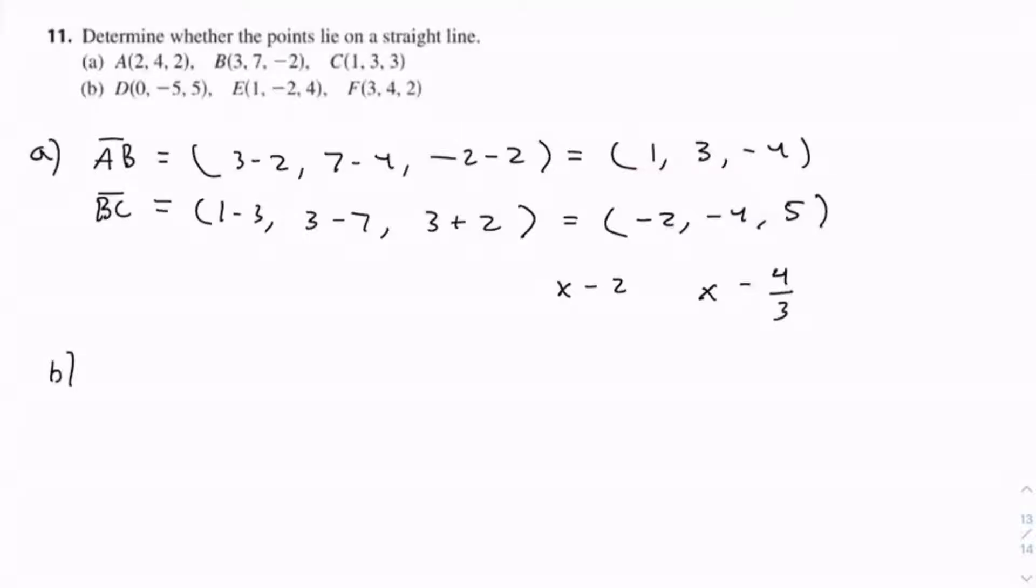Let's do a different color. So we have DE and EF. This equals 1, 1 minus 0, negative 2 minus minus 5, which is plus 5, 4 minus 5. So this equals 1, 3, negative 1.